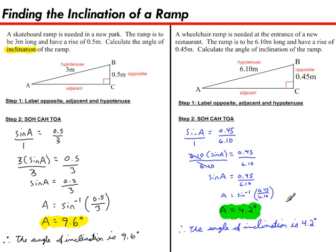The wheelchair ramp will have an angle of inclination of 4.2 degrees. We got that by first listing our opposite, adjacent, and hypotenuse sides, and then we chose sine to carry out the mathematical steps. Eventually we cross-multiplied, removed the 6.10, and then we entered this line into our scientific calculator to get 4.2 degrees.